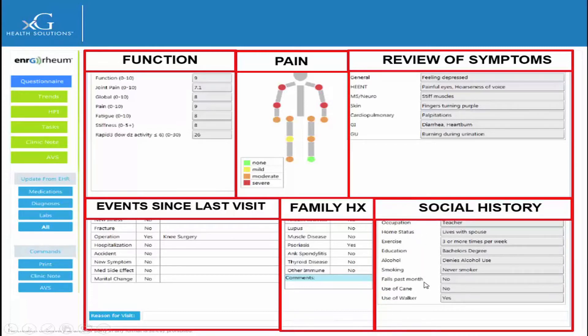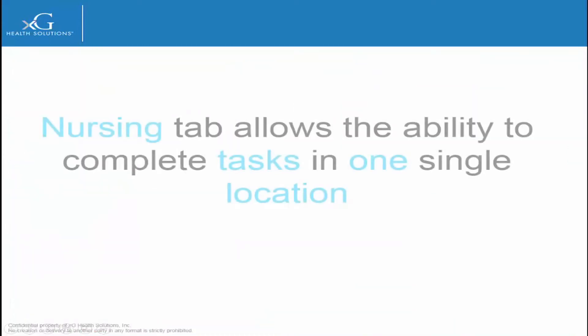Because an EHR is usually a shared record among many different types of providers, the information we get is an amalgam of their entries. The Nursing tab allows the nurse to complete all of the tasks in one single location.